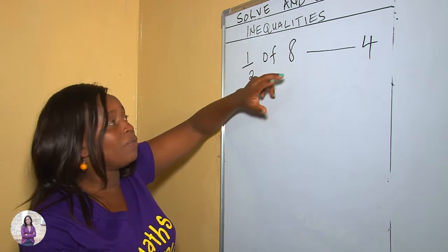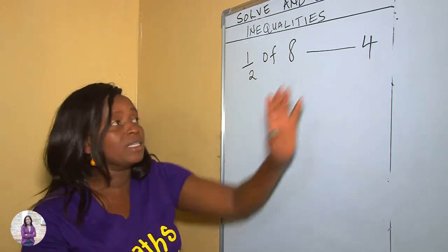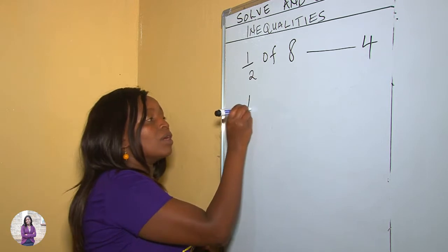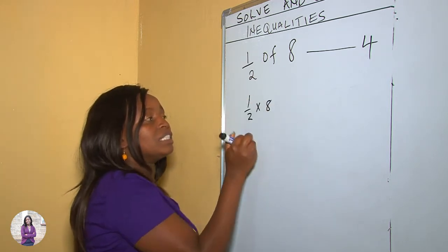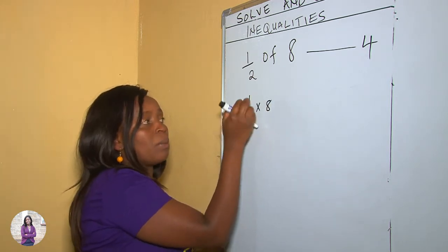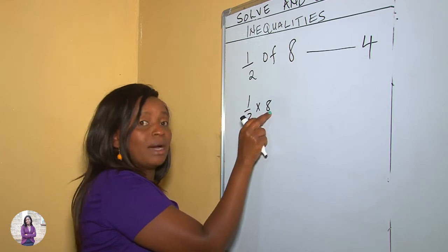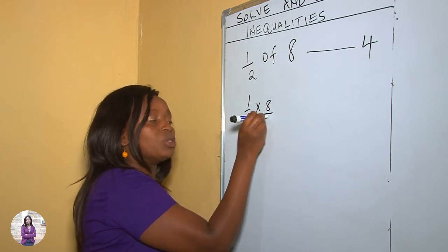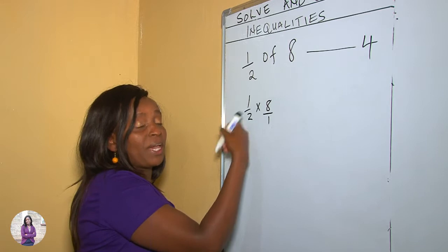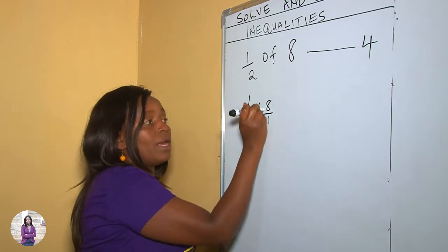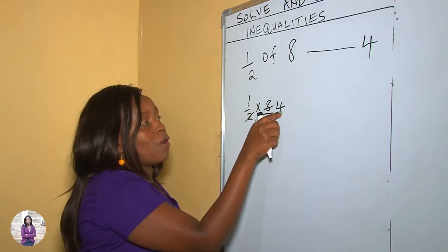So the first thing we work out this side before comparing. A half of 8 means multiply by 8. When you are multiplying a fraction by a whole number, you normally change the whole number into a fraction, and now you can be able to cross multiply.